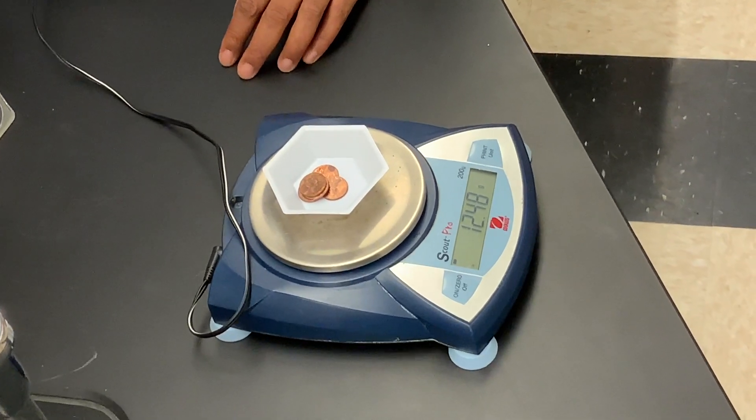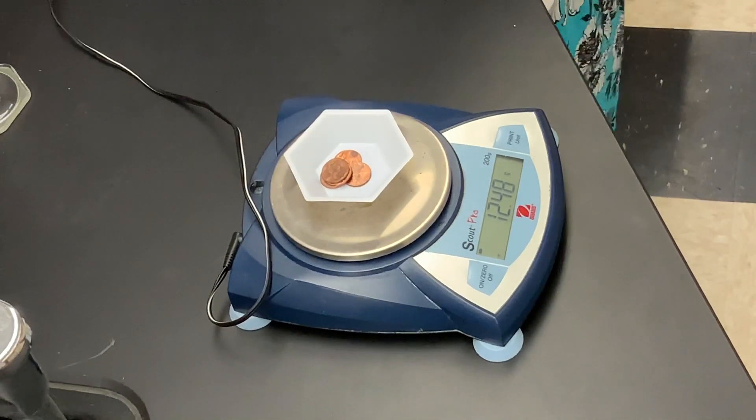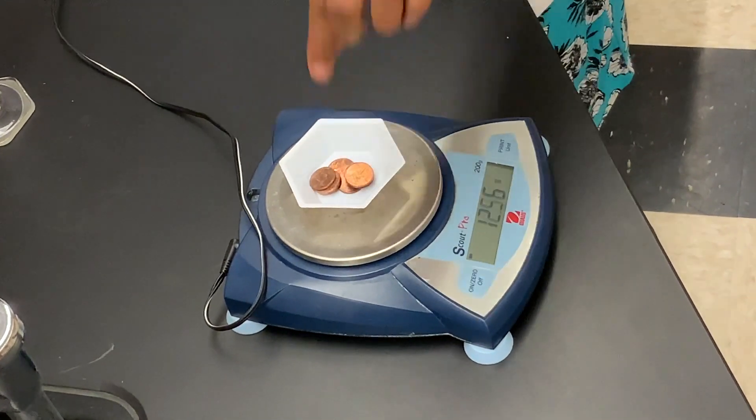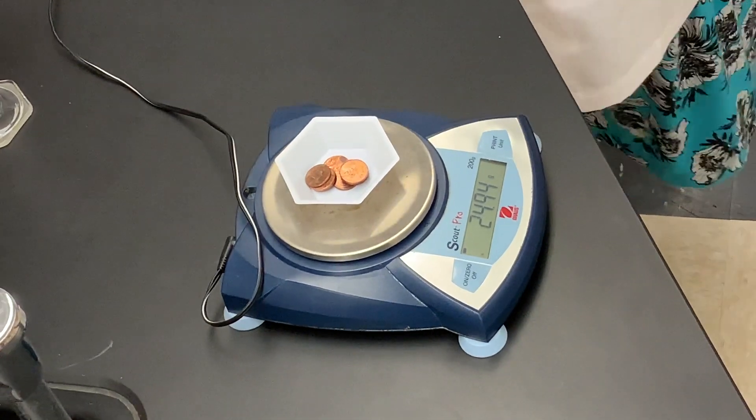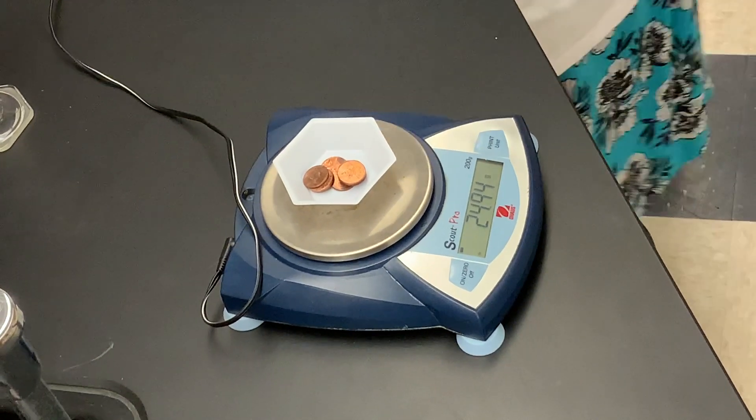Now we're going to add five more pennies to the five that are already there, giving us a total of 10 pennies. 10 pennies have a mass of 24.94 grams.